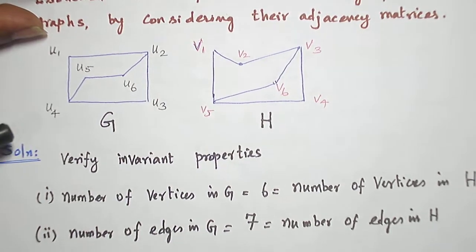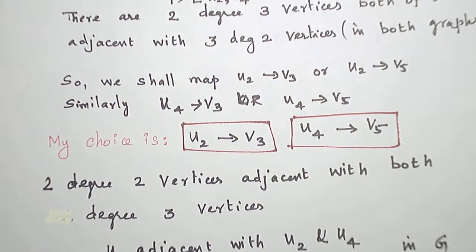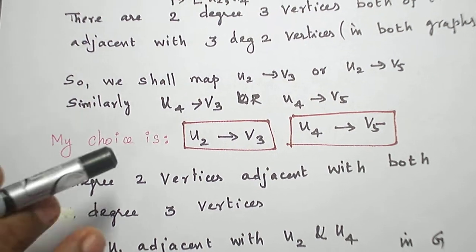U2 is mapped to V3, U4 is mapped to V5. This is my choice. Now,